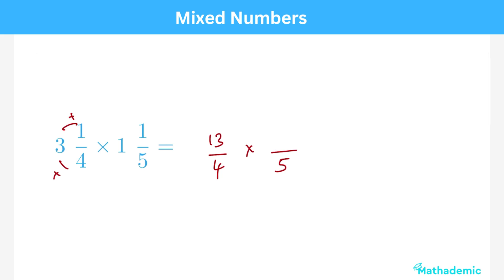And the same for 1 and 1 fifth. Multiply 1 and 5 and then add it to the numerator. We get 6 over 5.